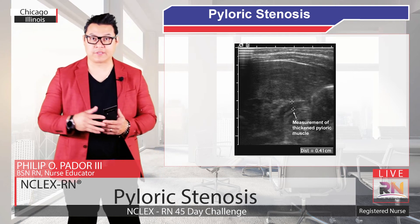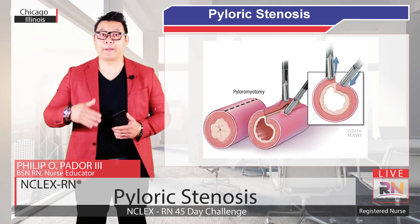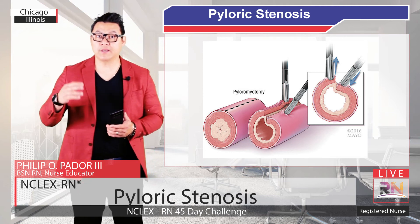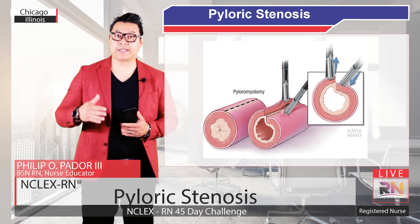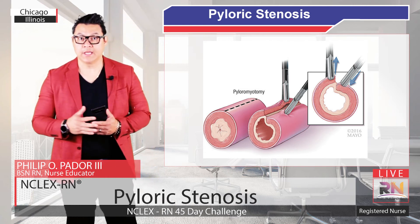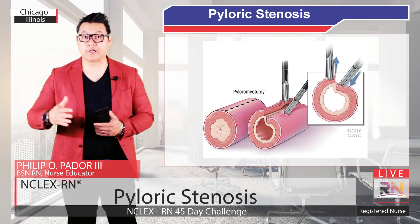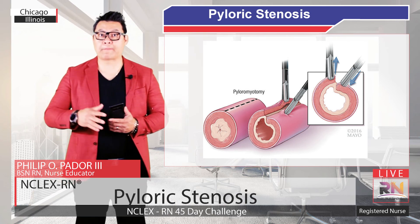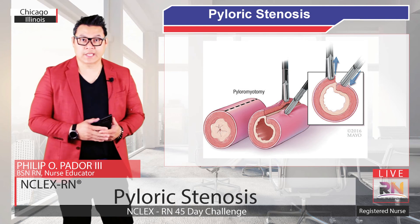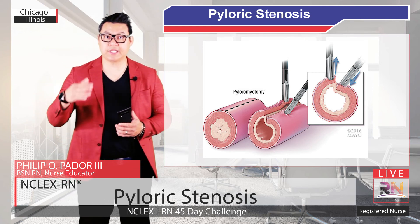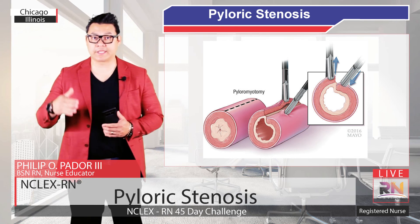Treatment for this condition is exclusively surgical. Pyloromyotomy has been performed regularly for these conditions. Surgery should be delayed, however, until the patient is stable and adequately hydrated with return to normalcy of the electrolytes. The procedure involves longitudinal incision of the hypertrophic pylorus and dissection to the level of the submucosa. You can see in this image that this allows the lumen of the pylorus to be opened and no longer compressed by the thickened muscles.